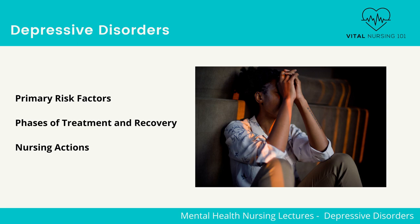There are three phases of treatment and recovery, which are acute, continuation, and maintenance. The acute phase is focused on reducing depressive symptoms and lasts 6 to 12 weeks. The continuation phase is focused on prevention of a relapse through pharmacotherapy, education, and psychotherapy, and lasts 4 to 9 months. The maintenance phase is focused on prevention of further episodes and lasts 1 year or more.